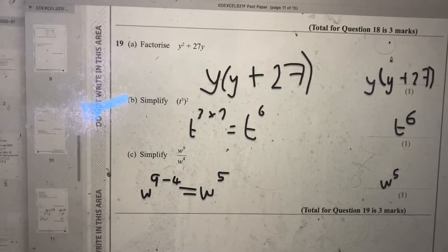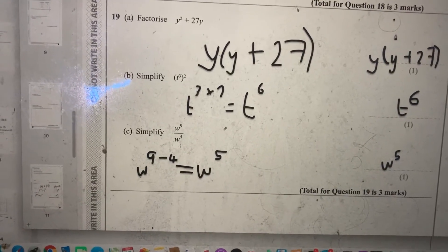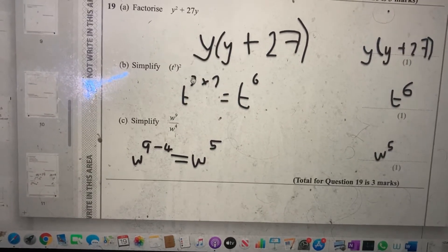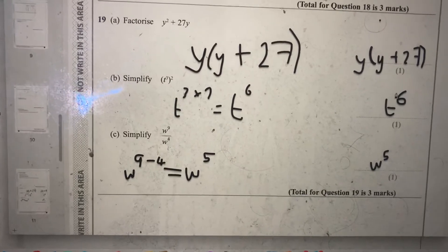For part b, simplify t cubed bracket squared. When I have a bracket, I would multiply my powers. So 3 times 2 is 6, so it's t to the power of 6.